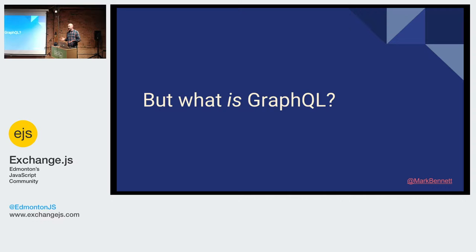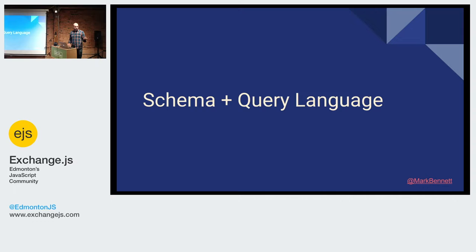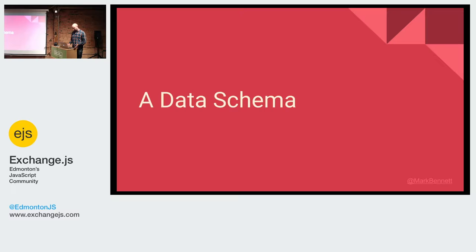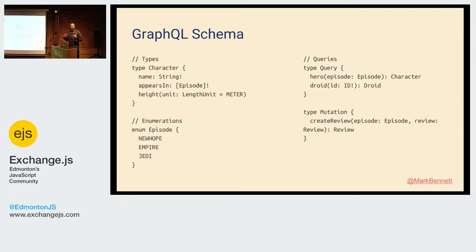So this is all great, but I haven't really talked about what GraphQL actually is. Essentially, all it is is a new data standard — a way of describing a couple of things: a data schema and a query language. The data schema describes your data in terms of basic types you can define for your app — for example, a character type in Star Wars. We have enumerations, like enumerating over the set of movies. We also have queries, which describe how you can retrieve data from your model, and interestingly mutations, which describe how you can change it. Together these give you a sense of what's available, how you get data out, and how you can modify it.